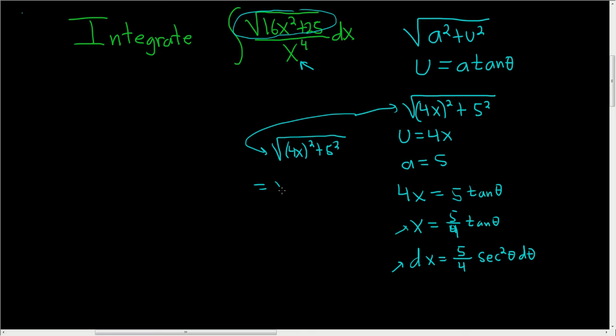So this is the square root of 4x squared plus 5 squared. And this is equal to the square root of, well let's see, 4x is 5 tan theta. So we square the 5, we get 25. We square the tangent, we get tangent squared. And then we still have the 25 here. 5 squared is 25. Factor out the 25. So we get the square root of 25, the square root of tangent squared theta plus 1. This is 5. And then tangent squared theta plus 1 is secant squared theta. And so here we get 5 secant theta.